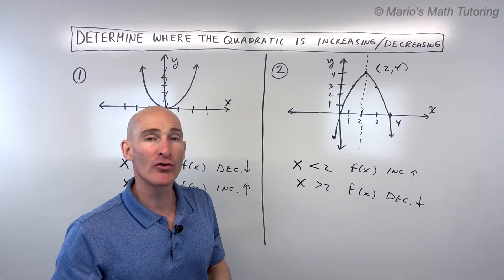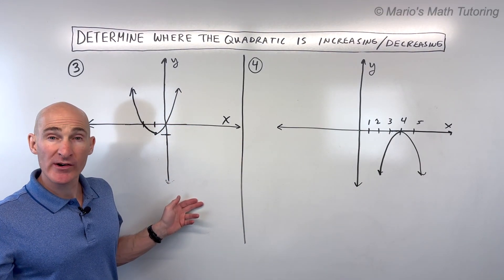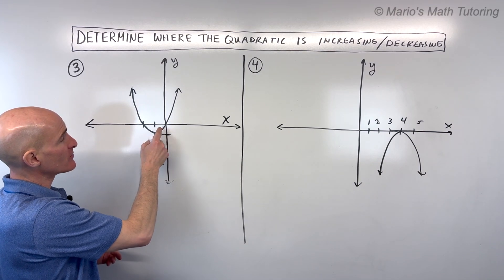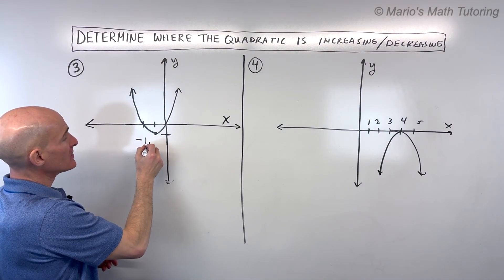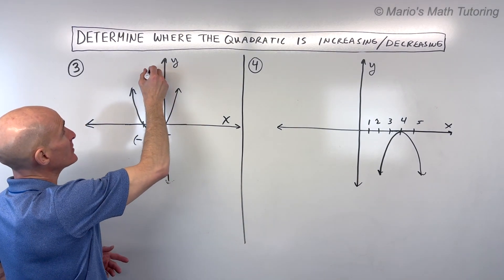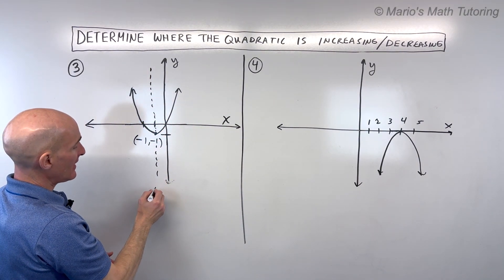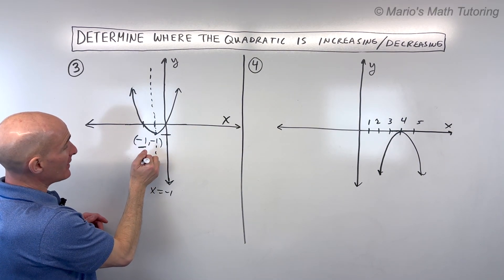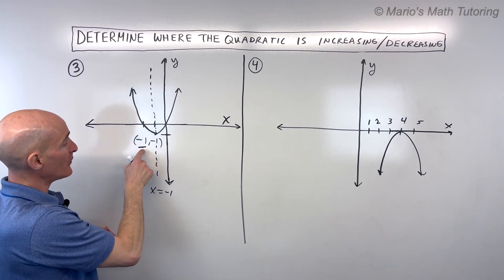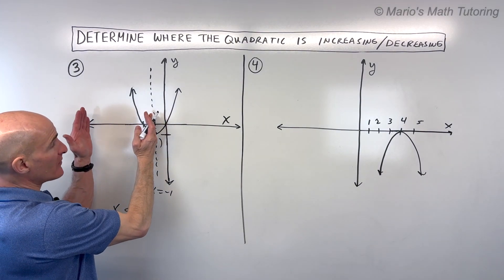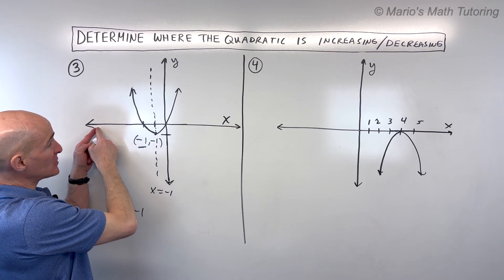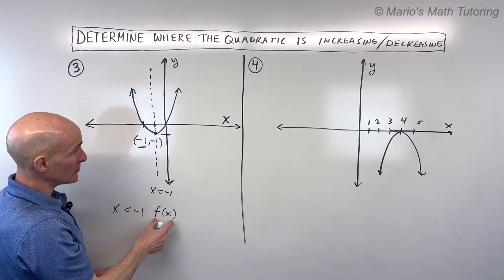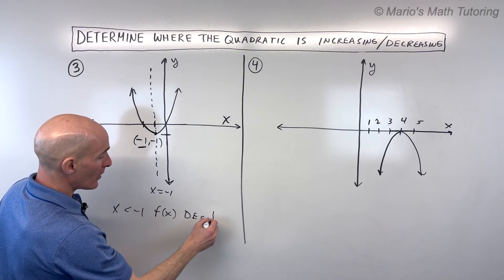See if you can do number three. Where is the function increasing? Where is the function decreasing? When I take a look at this graph, the key point is this vertex right here — we're at negative 1, negative 1. What I like to do is look at the axis of symmetry — that's the vertical line that goes right through the vertex, the line x equals negative 1. That's our dividing line. When x is less than negative 1, as you're working from left to right, the y-values are decreasing — f of x is decreasing.